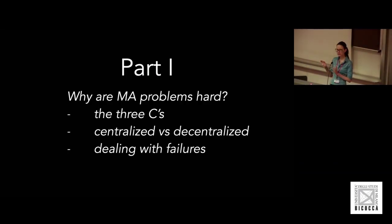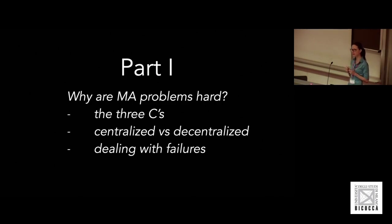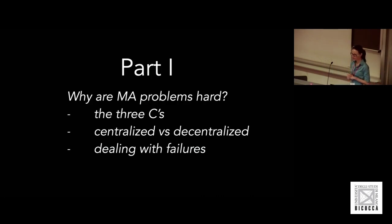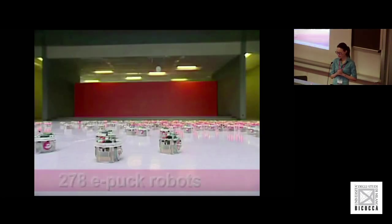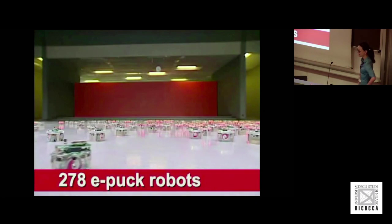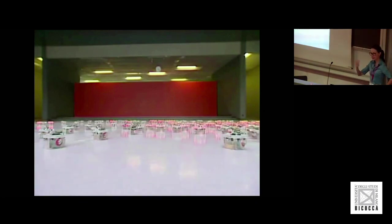Moving on to solving these problems — many multi-agent problems are actually really hard, and I'm going to convince you why. To talk about that, I'll introduce you to the three C's: coordination, cooperation, and collaboration — why they are different — and I'll also talk about centralized versus decentralized systems and how we deal with failures. To get things started, I'm going to play a movie and I want you to pay attention because I will ask you a question at the end.